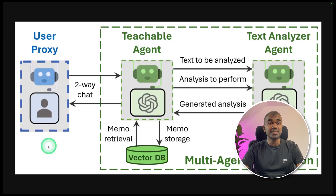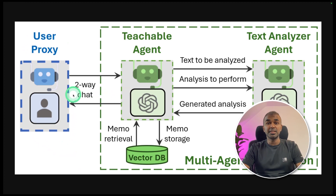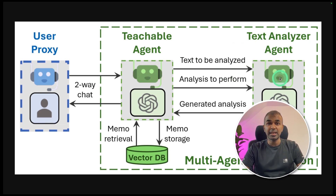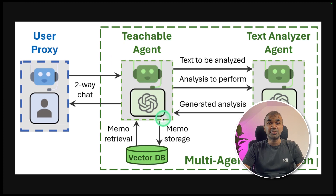Coming to Teachable Agent — as you can see in this image, the user proxy is having a conversation with the Teachable Agent. The user proxy is you talking to a Teachable Agent. The Teachable Agent uses a text analyzer agent, which analyzes the important points in the discussion and saves them in the vector DB. So next time when you ask a question, the Teachable Agent can respond based on the previous conversation, meaning it understands the context and responds much more accurately.